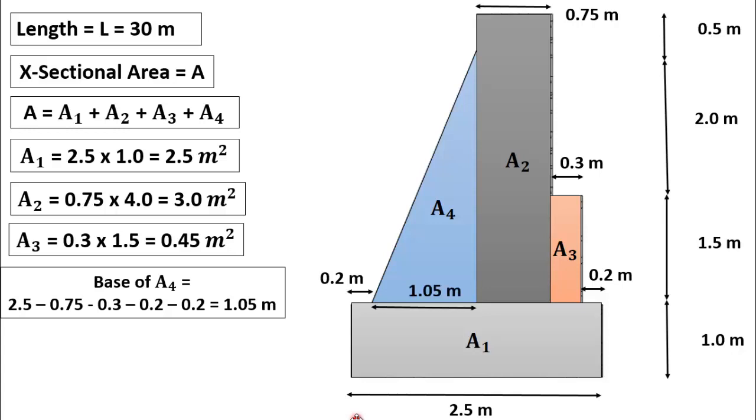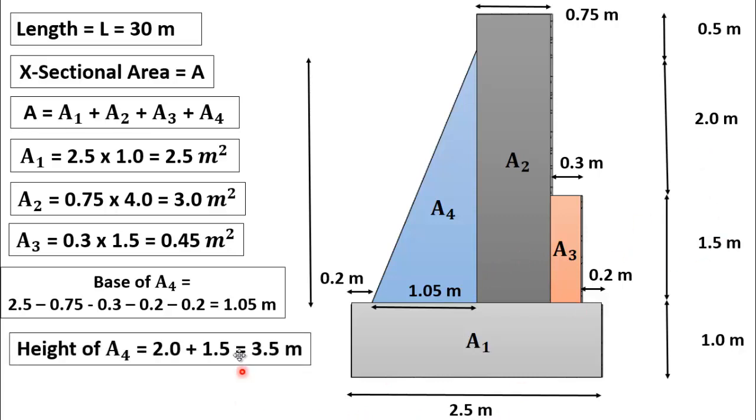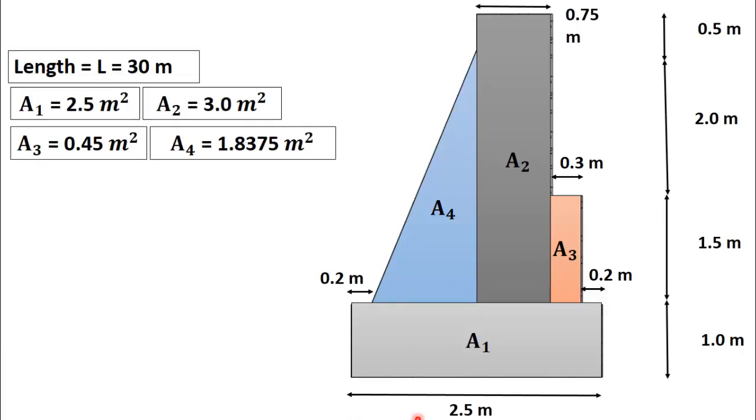Height of A4 will be equal to sum up 1.5 meter and 2 meter which is equal to 3.5 meter. Now as we know that the area of a triangular portion is equal to 1 over 2 into BH. So A4 is equal to 1 over 2 into base which is 1.05 multiplied by height which is 3.5 meter. After simple calculation we will get A4 is equal to 1.875 square meter. So we have found the area of all the four figures.